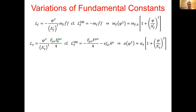Likewise, we can consider the phi-squared interaction with the electromagnetic field from the standard model. In this case we would expect a similar apparent dependence of the fine structure constant alpha on the local value of phi squared. The size of this effect is controlled not only by the amplitude of the scalar field phi but also by the energy scale parameter lambda in the denominator — these parameters are generally different for different types of interactions.